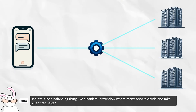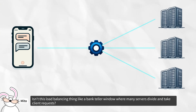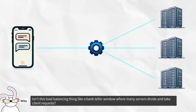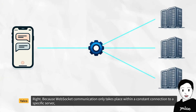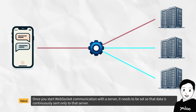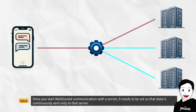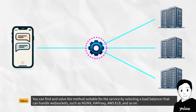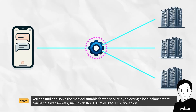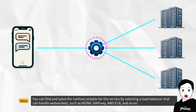Load balancing is like a bank teller window where many servers divide and take client requests. Because WebSocket communication only takes place within a constant connection to a specific server, once you start WebSocket communication with a server, it needs to be set so that data is continuously sent only to that server. You can find suitable methods by selecting a load balancer that can handle WebSockets, such as NGINX, HAProxy, AWS ELB, and so on.